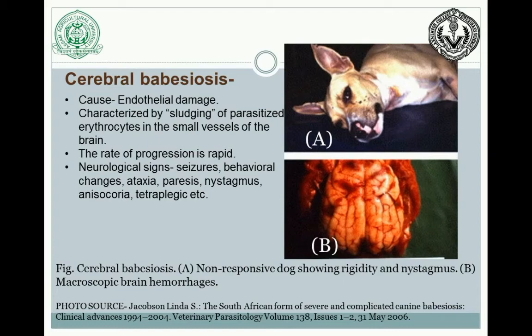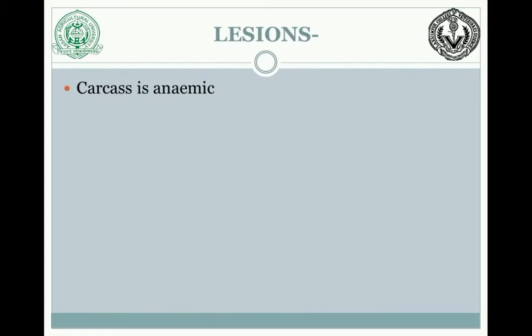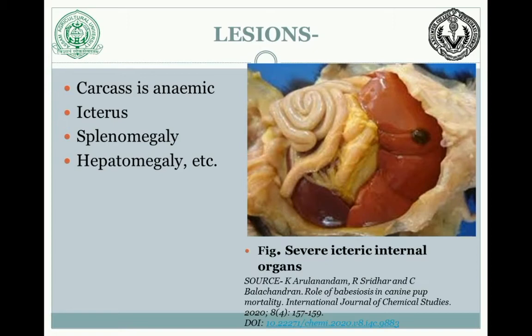Coming to the lesions: the carcass is anemic, there is icterus, splenomegaly, hepatomegaly, etc. This picture shows severe icteric internal organs.